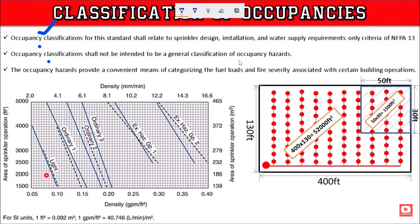The general classification of occupancy hazard — NFPA 13 is not intended for any other purpose. NFPA 13 tables should only be checked for design, installation, and water supply requirements for a sprinkler system. The occupancy hazard provides a convenient means of categorizing fuel loads and building operations for sprinkler design purposes.